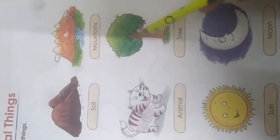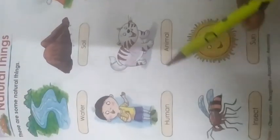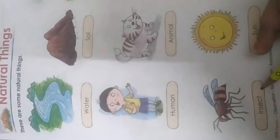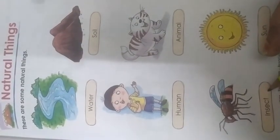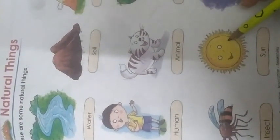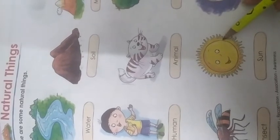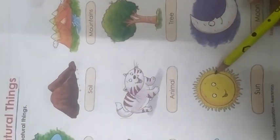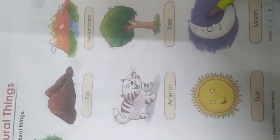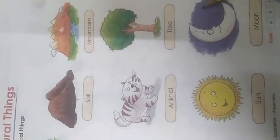Next, trees. Trees. Insects — like housefly, cockroach. Sun. And moon. In the day we can see the sun in the sky, and at night we see the moon.